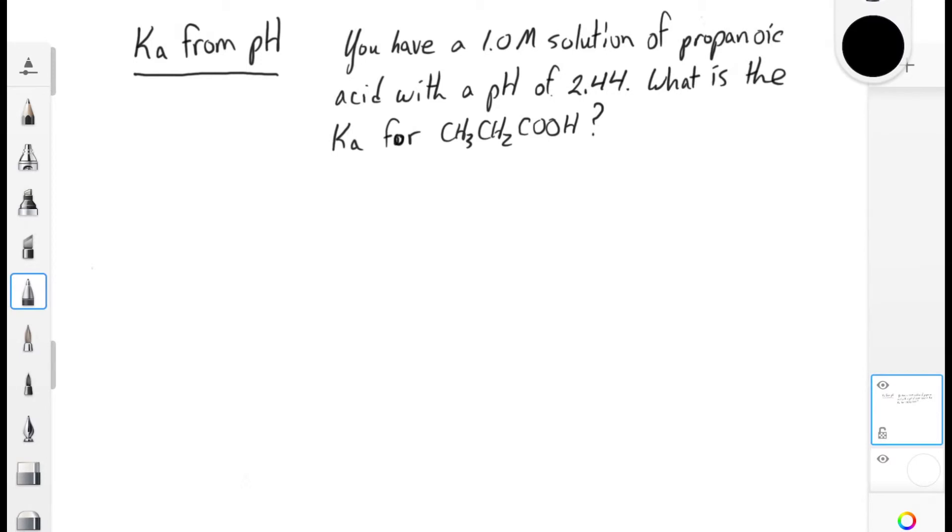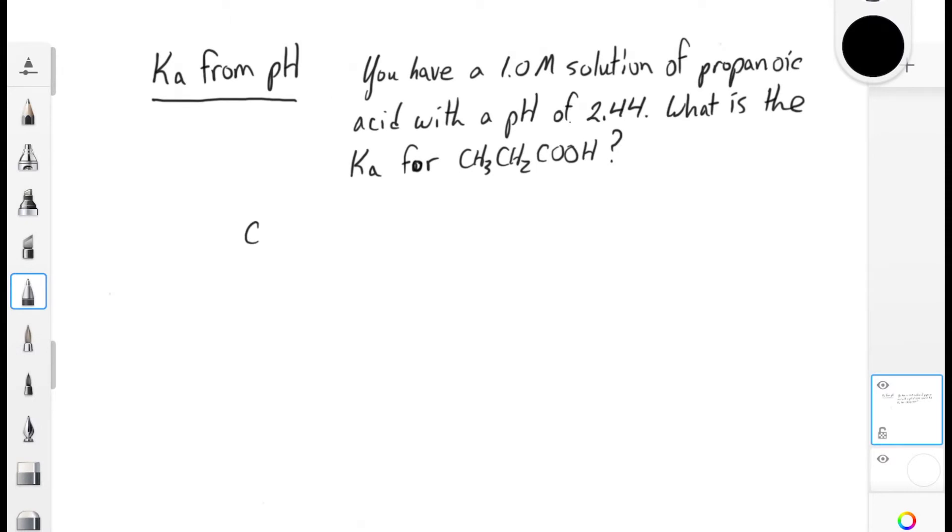Structurally, this is going to be very similar to the last example. We'll need to set up an ICE table in order to solve for our Ka value. So we have our ICE table prepared, and the difference between this example and the last is that this time we know the H-plus concentration at equilibrium because we know the pH.